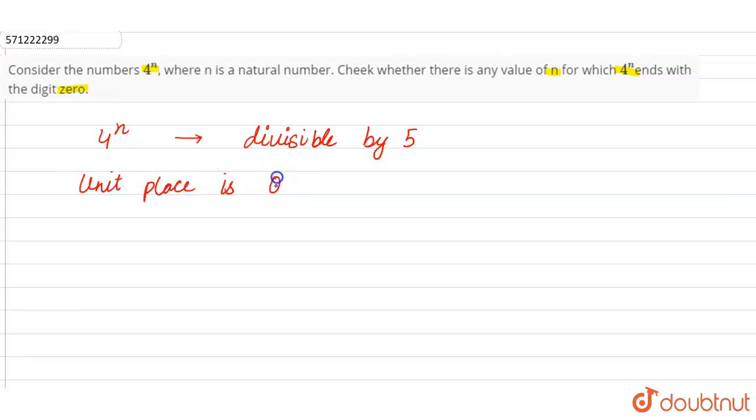So the factors of 4^n, the prime factors of 4^n is 2 times 2^n, right? These are the prime factors of 4^n. So here if you can see there is no,